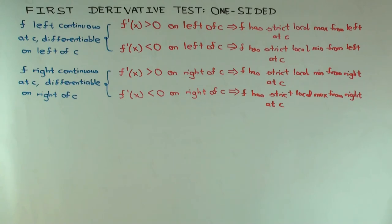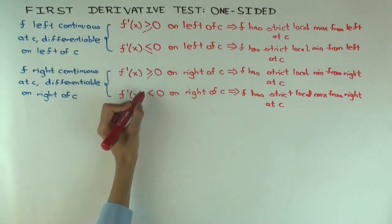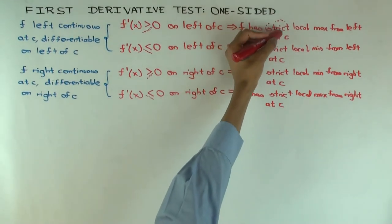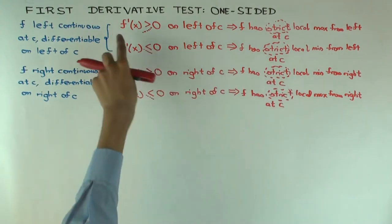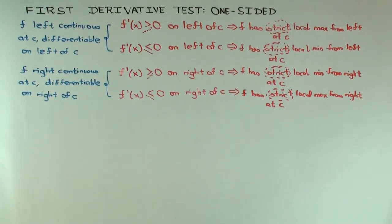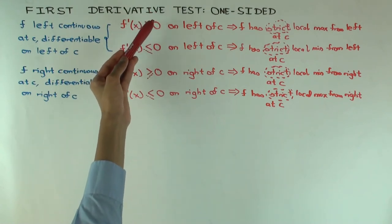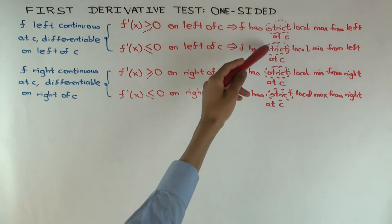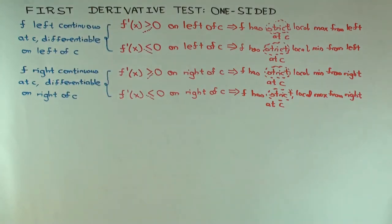The other remark: what happens if we allow f prime of x to be greater than or equal to 0 on the left? Well, you may lose strictness — the strict local max could go away. However, it won't usually go away unless f prime is identically 0 on the immediate left of c. If f prime of x equals 0 on the immediate left of c, then f is constant there and won't be a strict local max from the left. But if f prime is oscillating between 0 and positive numbers — increasing, then constant, then increasing — f will still have a strict local max. So you could lose strictness if you allow equality with 0, but only if it becomes identically 0 on the immediate left.